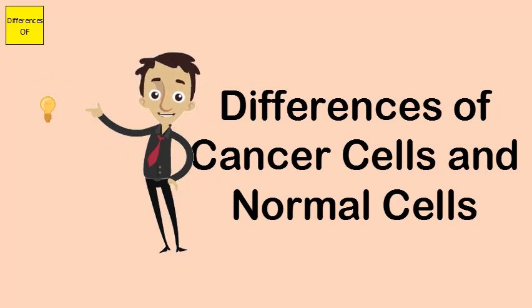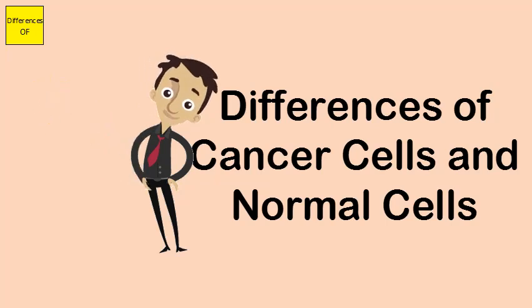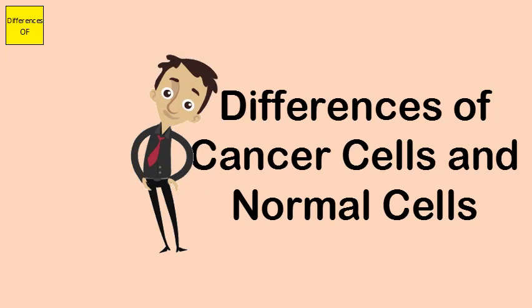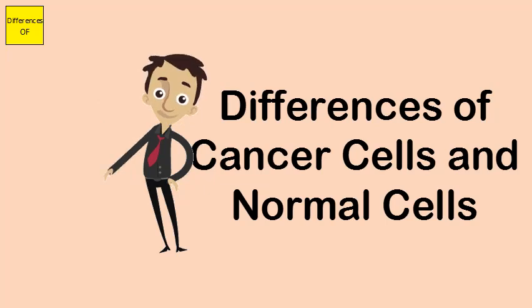Normal cells undergo the process of apoptosis — self-destruction — if they detect abnormalities and damage in their organelles. There is no process of self-destruction in cancer cells.